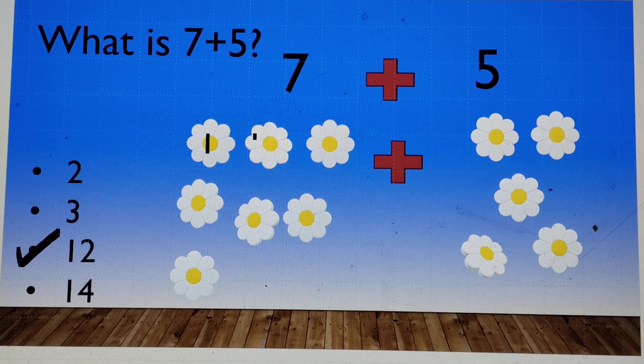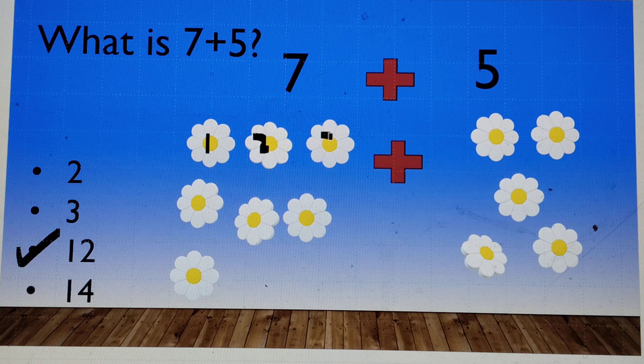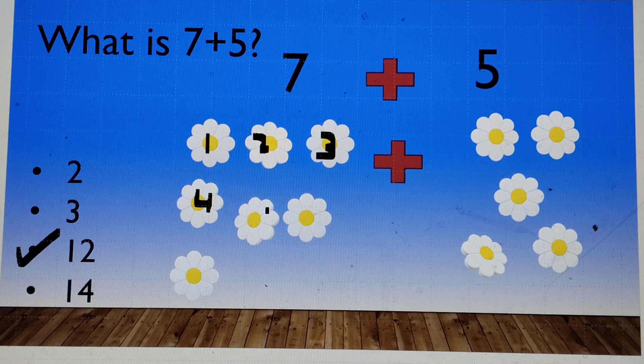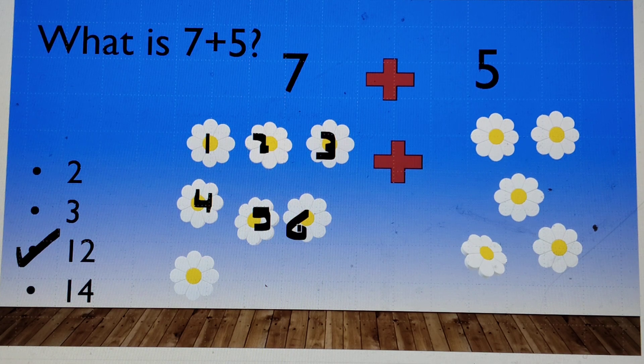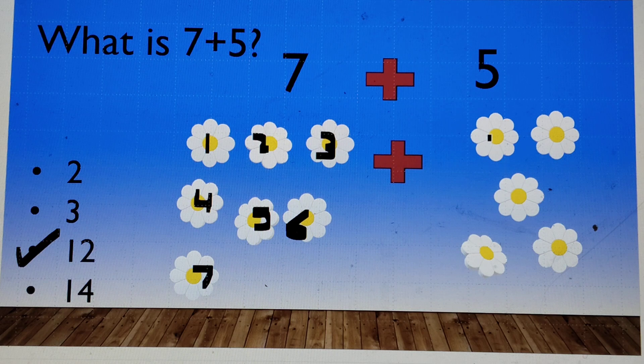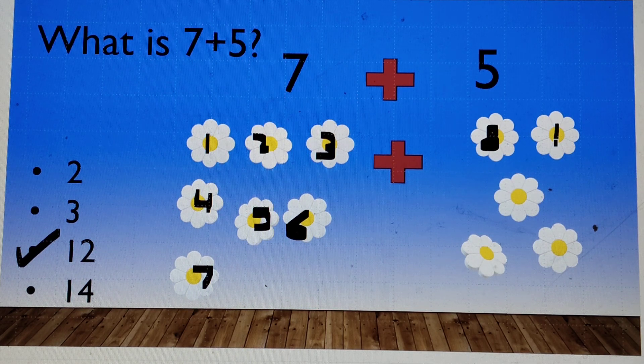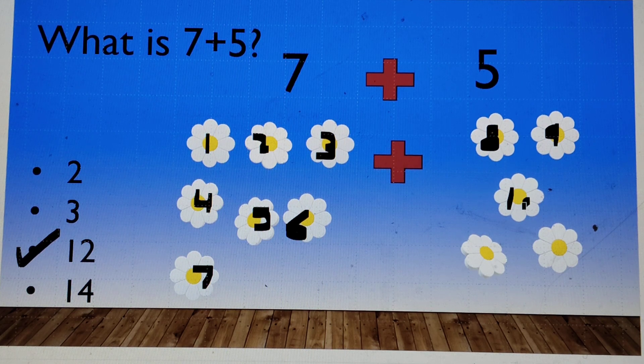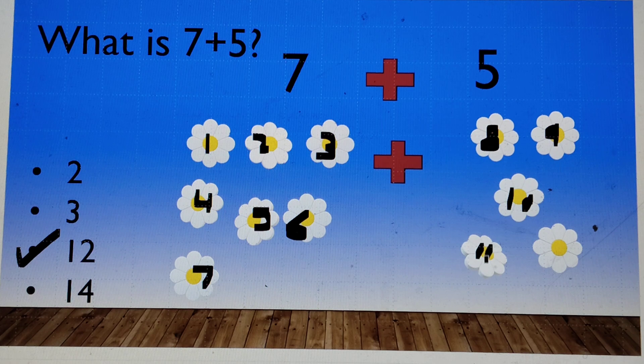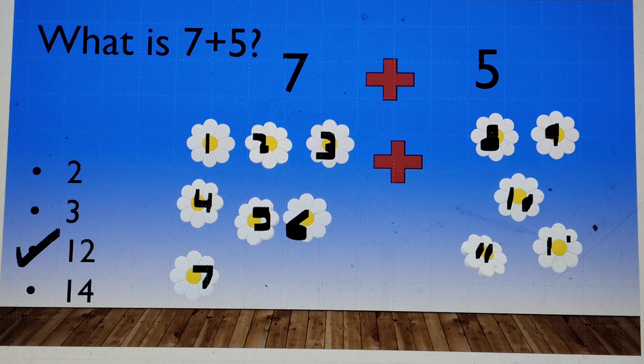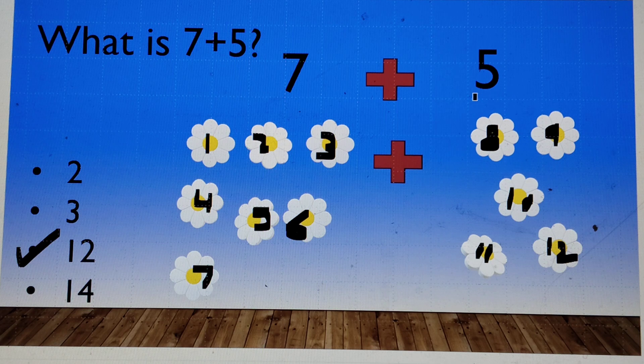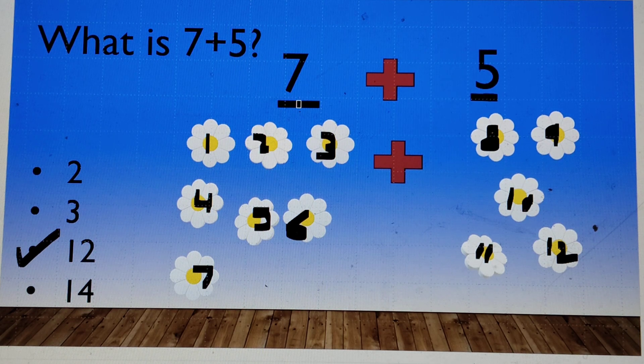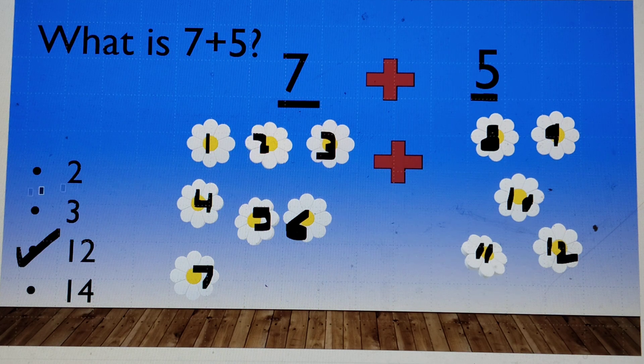1, 2, 3, 4, 5, 6, 7, 8, 9, 10, 11 and 12. So these are 5 flowers and these are 7. When you add 7 with 5, it becomes 12. So the answer is 12.